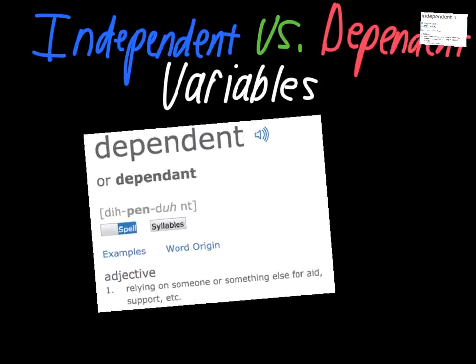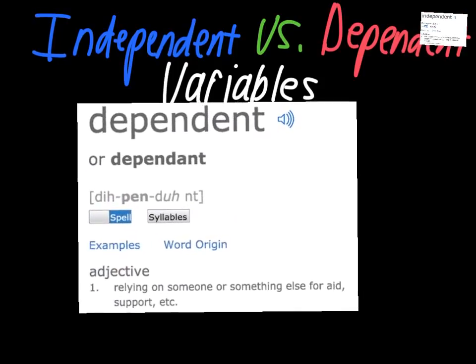As far as dependent goes, it's the opposite of that — it's now relying on someone or something else. So in our experiments, something else is influencing the dependent variable.